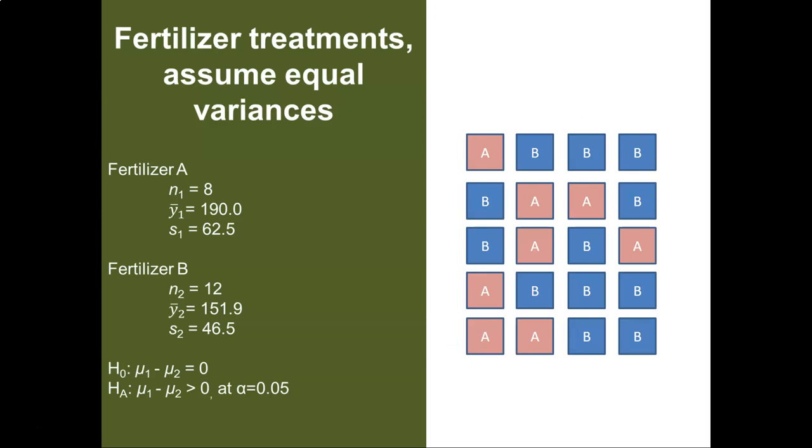So let's think back to the fertilizer treatments. But now let's run a statistical test where we assume equal variances. All of the data are the same, but we'll calculate a different test in this case. This time we'll pool the standard deviations and conduct a two-sample t-test assuming equal variances.